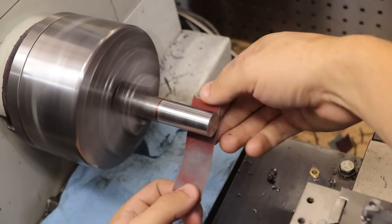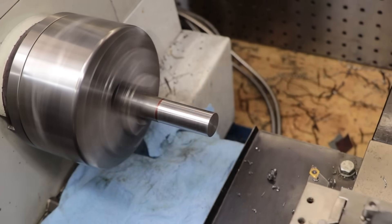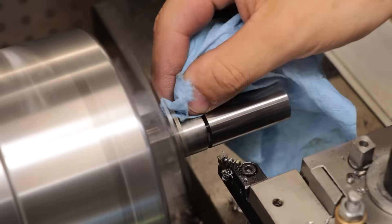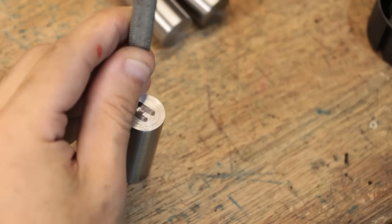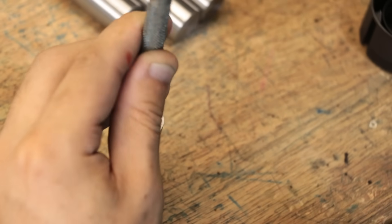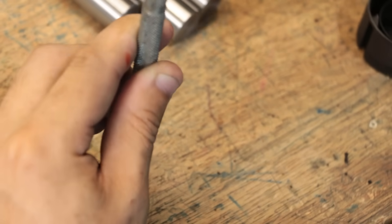The important part is I'm going to sand them to 1200 grit, because the surface finish of the part is going to determine the final finish of the blue. Once I've done that, I'll mark out each one with a center punch so we know which type of bluing is on each part.